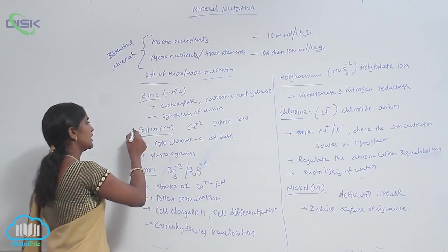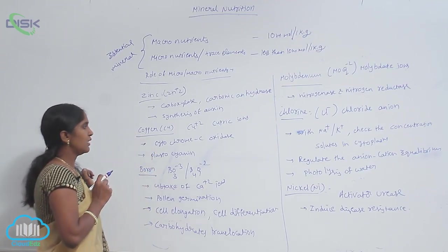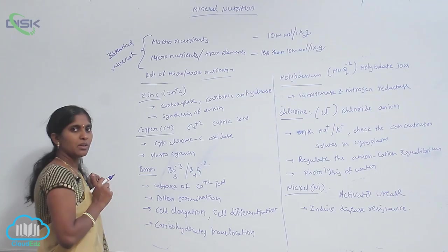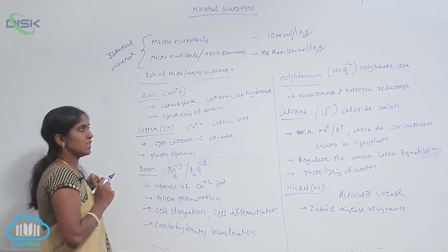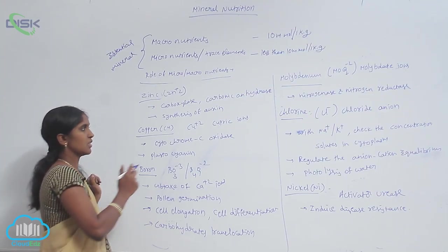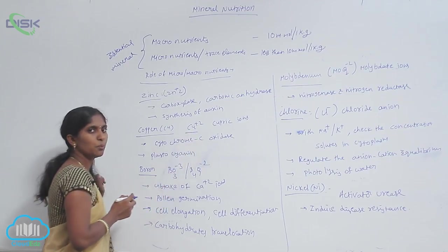And the next micronutrient is copper. Copper is available for plants as cupric ions, Cu+2.